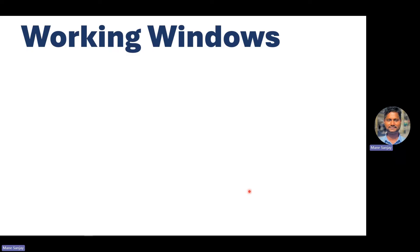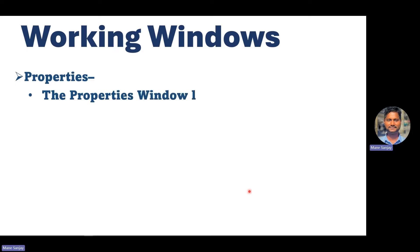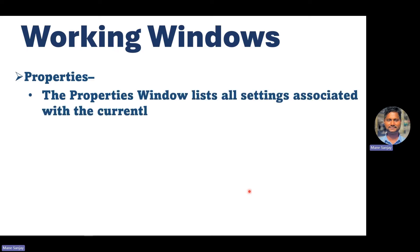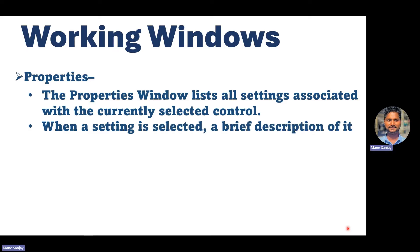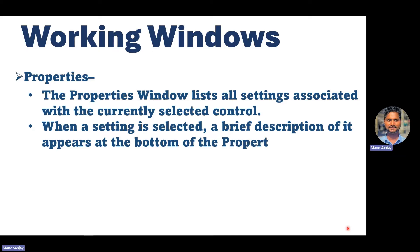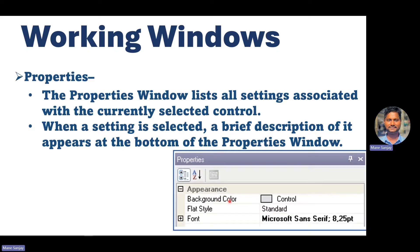The next working window is Properties. The property window lists all the settings associated with the currently selected control. If you are working with a slider or a button, you should know all settings associated with that control. When a setting is selected, a brief description appears at the bottom of the property window. You can see the background color, style, and font - everything is accessible inside the property window for the controls you use to design your panel.